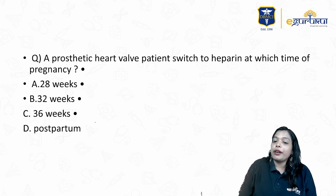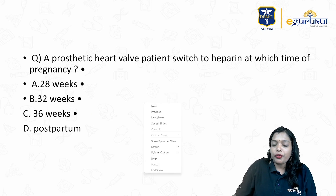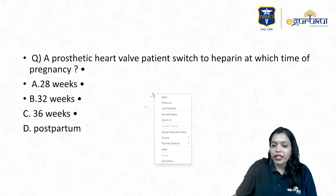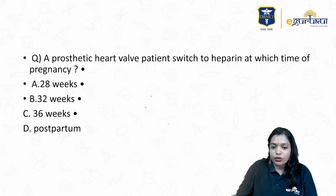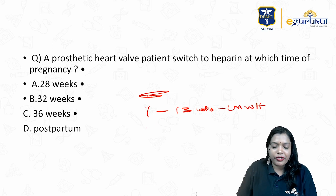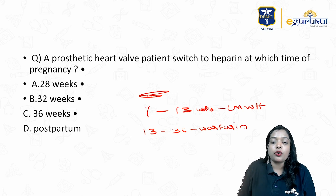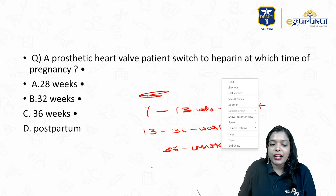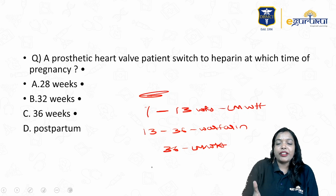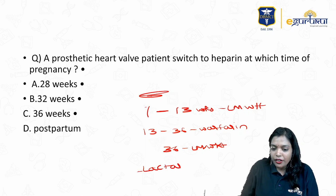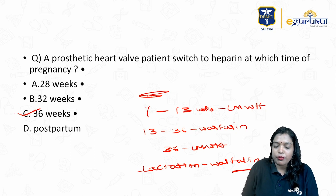MCQ 2: A prosthetic heart valve patient — at which time of pregnancy should she switch to heparin? From 1 to 13 weeks, the patient has to use low molecular weight heparin and avoid warfarin, because warfarin causes warfarin embryopathy — also called Conradi syndrome. From 13 to 36 weeks, the patient can use warfarin. Beyond 36 weeks, shift back to low molecular weight heparin because warfarin has a long half-life and can enter fetal blood causing anticoagulation in the fetus. During lactation, use warfarin again. So she has to shift at 36 weeks.